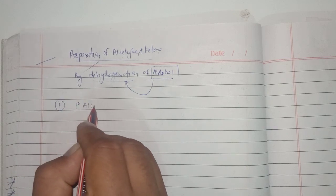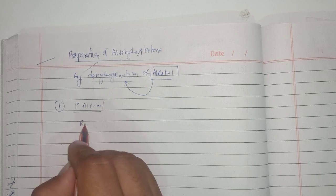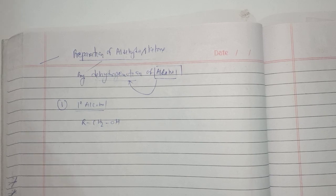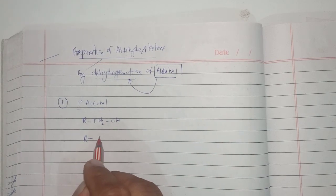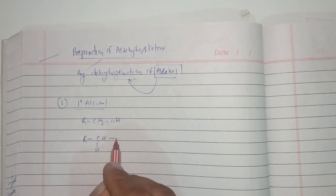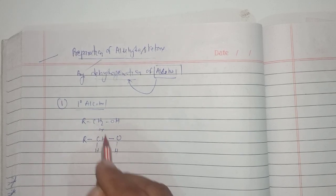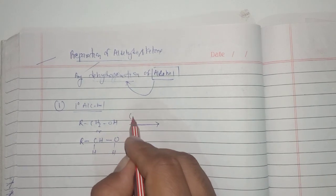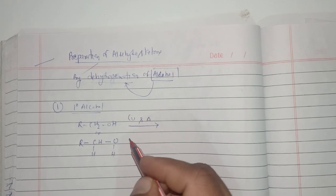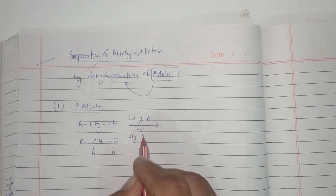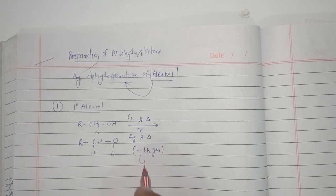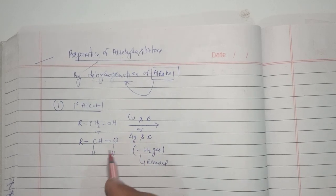Let us take the first example. I am taking a one-degree alcohol: RCH2OH. Now this one-degree alcohol, when it is treated with copper powder and heated, or treated with silver powder and heated, a reaction takes place.